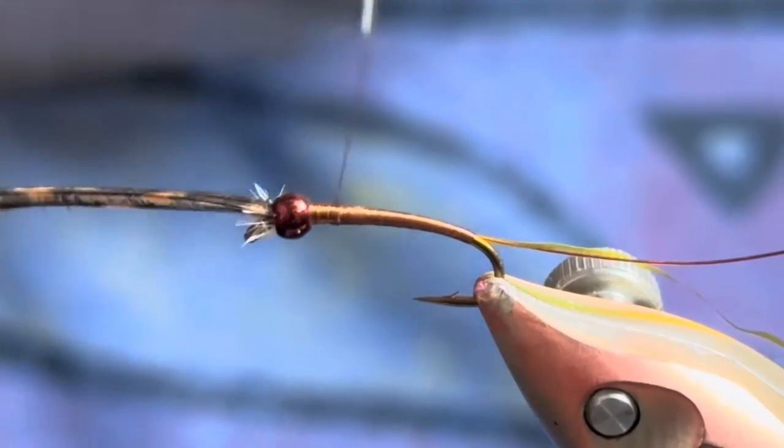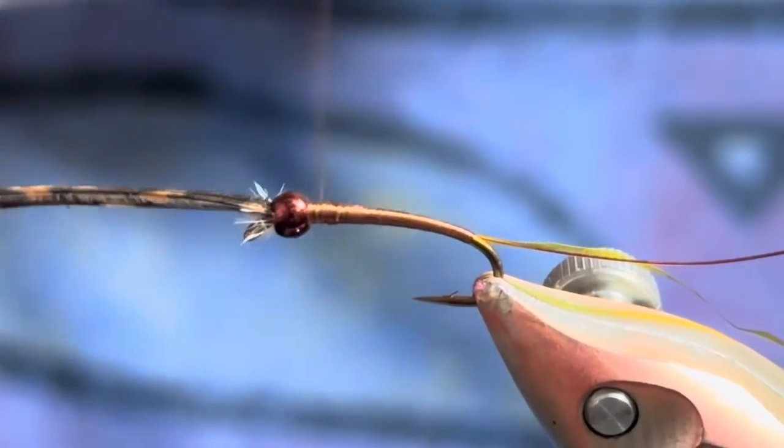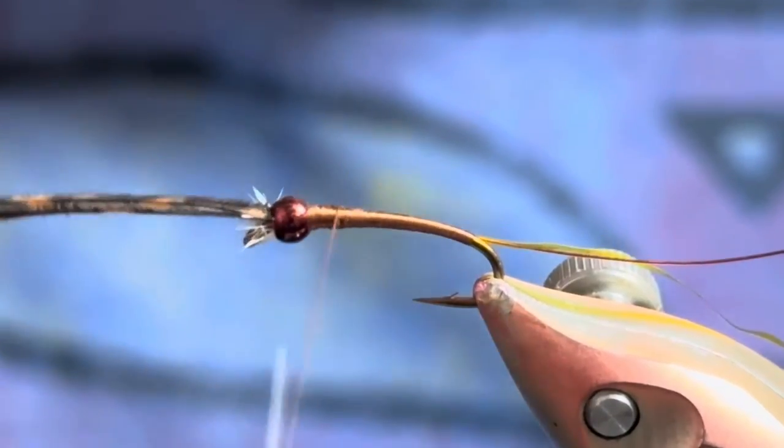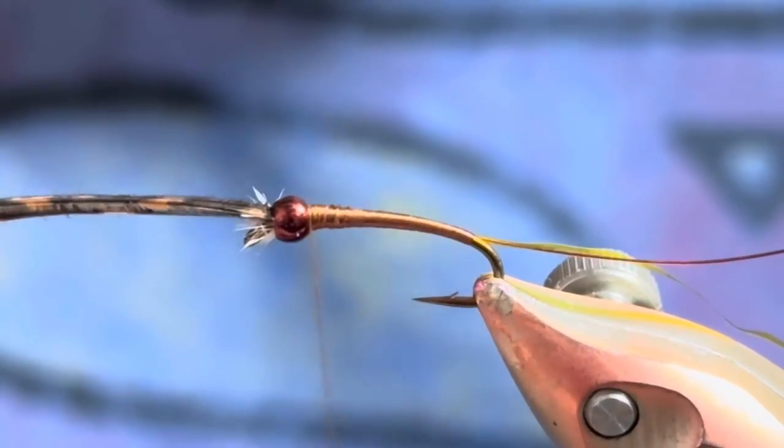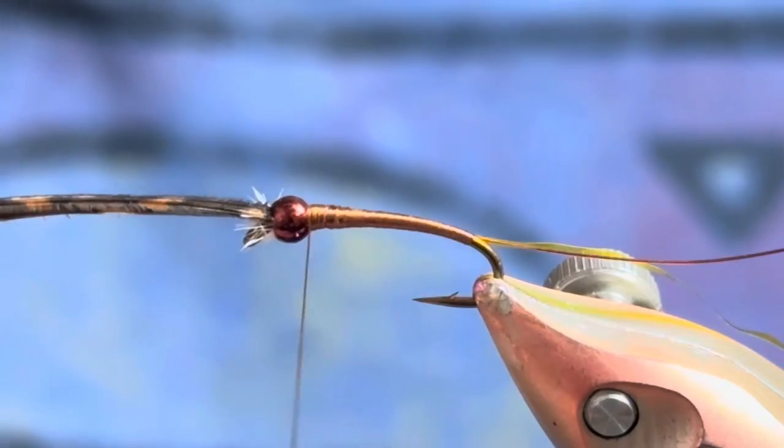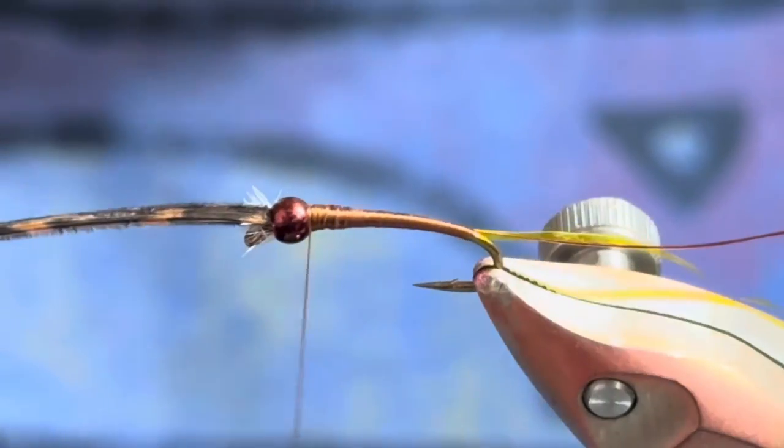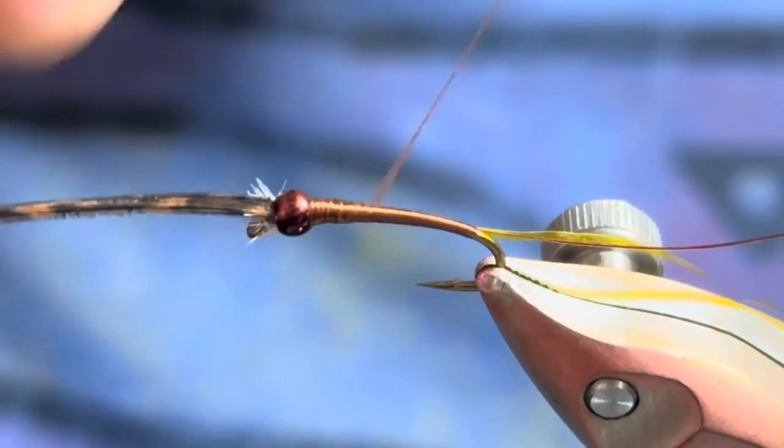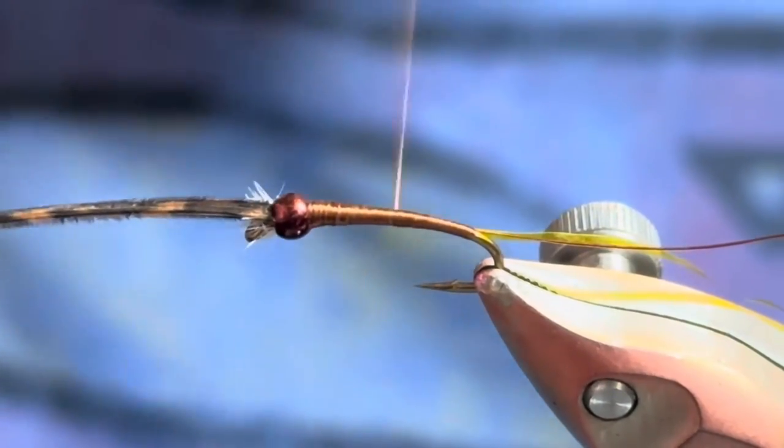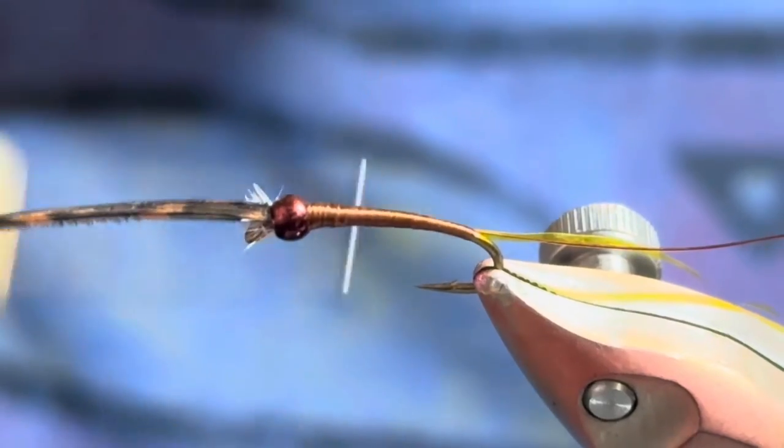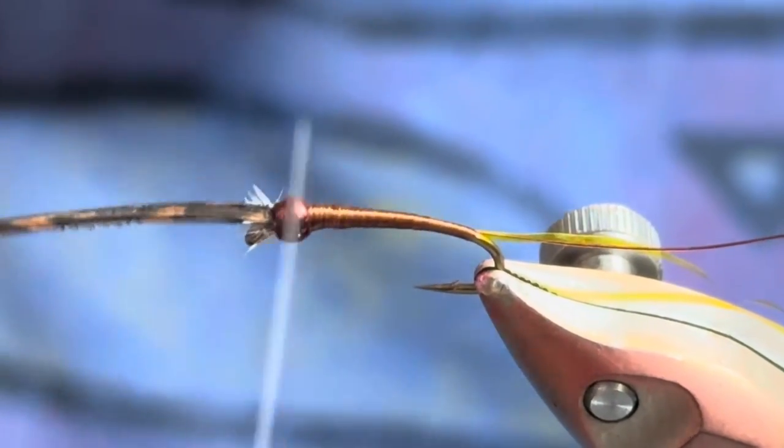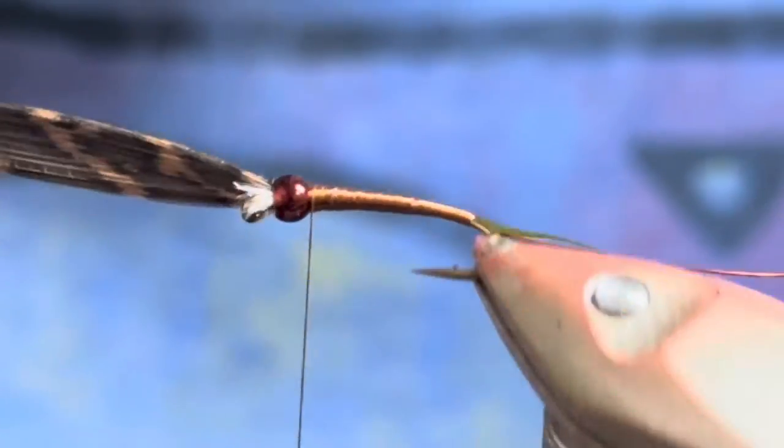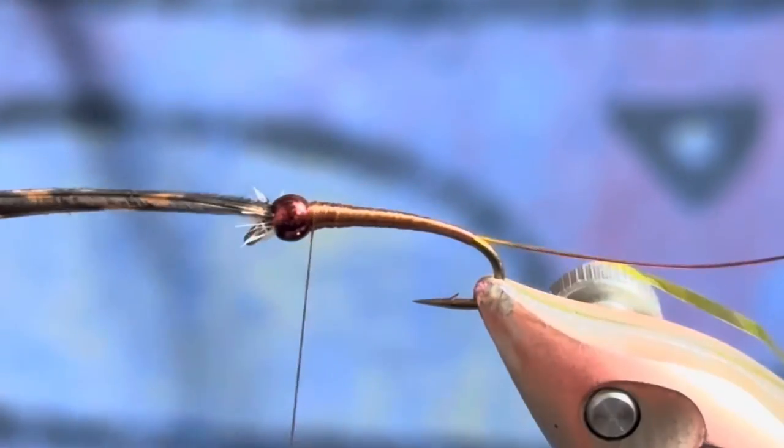You may have noticed when I went to grab that buzzer wrap, when I dropped my bobbin I spun it counterclockwise, and that's kind of a habit that I have from tying so many of these things. Typically when I let it go, I'll give it a spin. It just keeps that thread nice and flat.